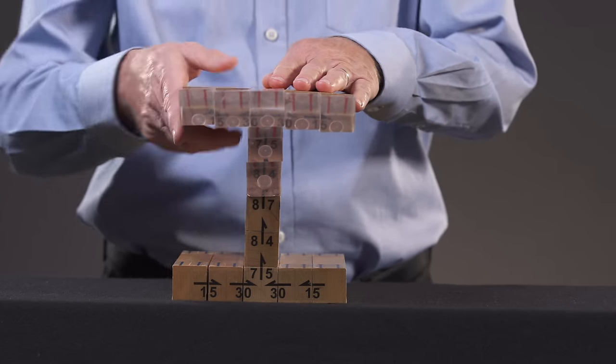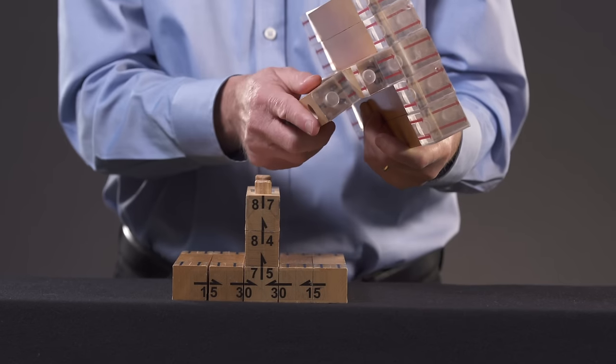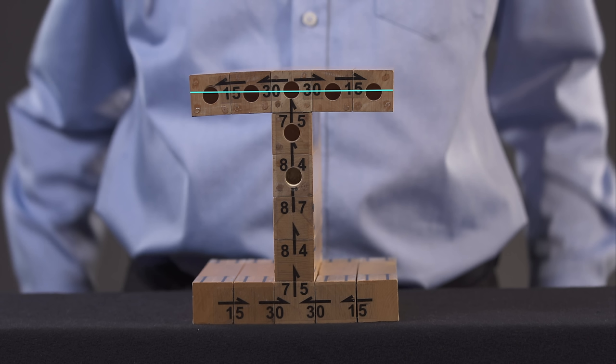Notice that our cuts always go across the thickness of the web or flanges. That way, all of the points in the cut are very near to each other, and would generally be expected to carry similar stresses. We never cut the flange parallel to its top surface, for example. Points along such a cut would be relatively distant from each other, and the stresses at various points along the cut would differ substantially.